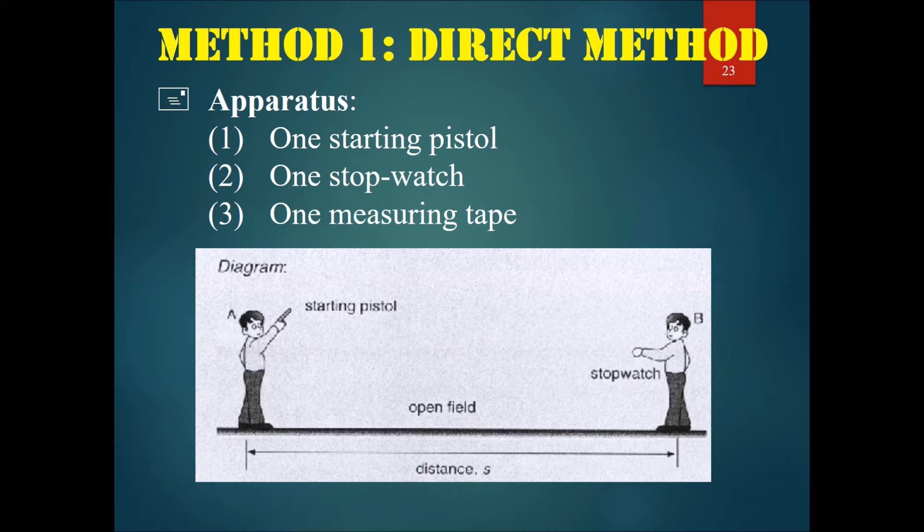The first method or the direct method is not very available to us because it requires a starting pistol, a stopwatch, and a measuring tape. Get a guy to stand quite far away, maybe a few km away. Let him hold the starting pistol and the other guy stands a few kilometers away with the stopwatch.